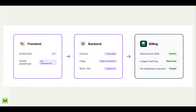We'll build a full-stack application — vanilla JavaScript for the front-end and Python on the back-end. The Metronome Python SDK will handle all of our billing operations. Metronome is the source of truth for billing data, so we won't need a separate database.